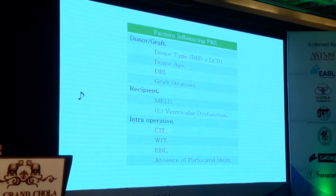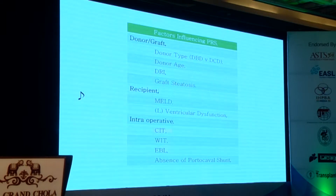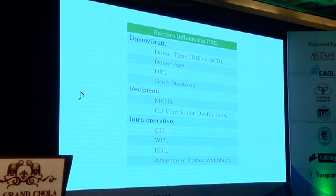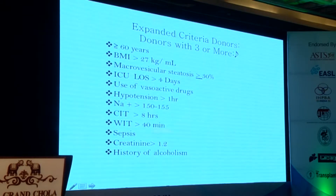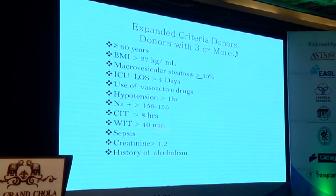A number of factors relate to reperfusion injury. Donor factors include whether it's a deceased brain-dead donor versus a deceased after cardiac death donor, donor age, the donor risk index, and graft steatosis — which is not the same as the donor risk index. Recipient factors include the MELD score and left ventricular dysfunction. Intraoperative factors include cold ischemic time, warm ischemic time, blood loss, and whether a shunt is used. Expanded criteria donors are defined by three or more of these factors, incorporating both donor and intraoperative variables.